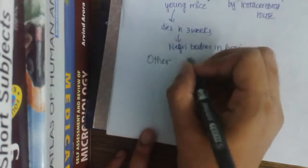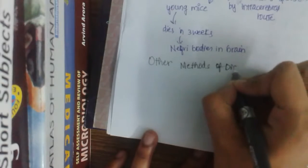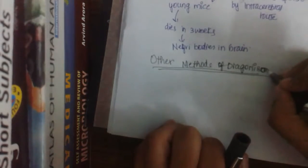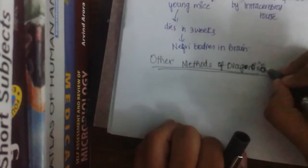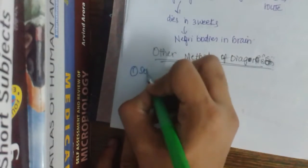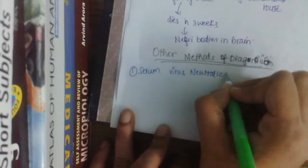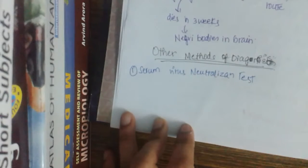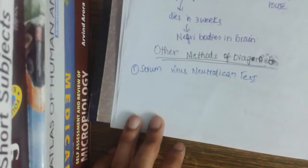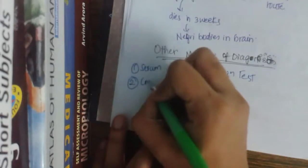The key difference in animal diagnosis is that most of these tests are performed on tissues after the death of the animal. Among the other final methods, the first is the serum virus neutralization test, which is very specific and useful for identification or isolation of virus, or for detection of post-vaccination antibodies in the serum.